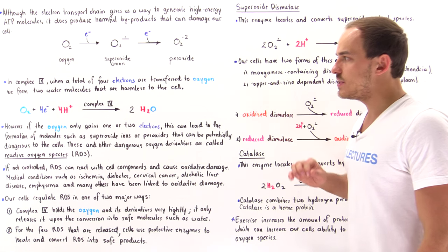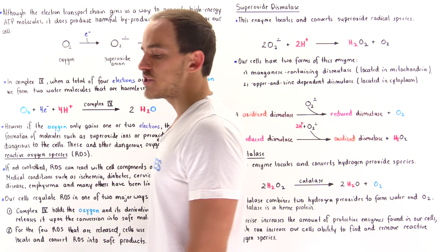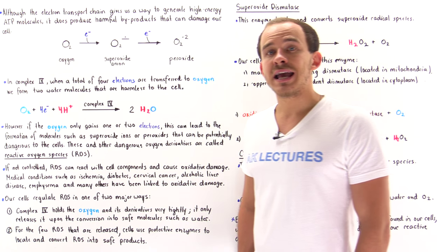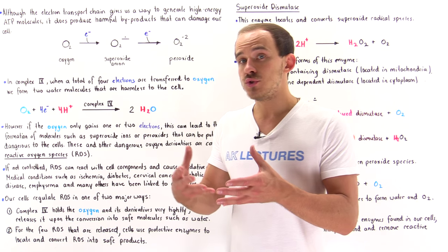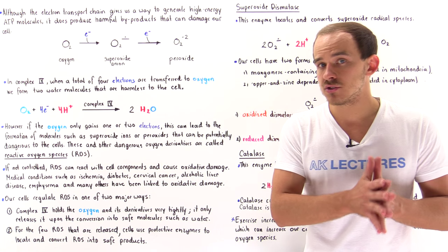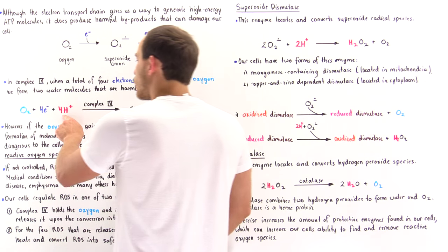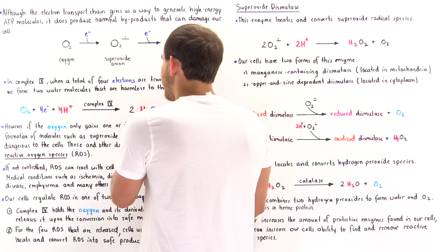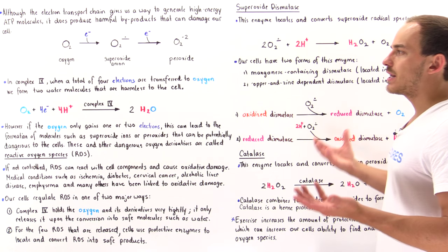Before discussing these molecules in more detail, let's remember what happens under normal conditions in Complex IV of the electron transport chain. The entire point of the electron transport chain is to take those high-energy electrons produced by NADH and FADH₂ molecules and use them to create a proton gradient. The final acceptor of electrons is diatomic oxygen, and in Complex IV, a total of four electrons and four protons are combined with diatomic oxygen to completely reduce it into water molecules, which are harmless to the cell.